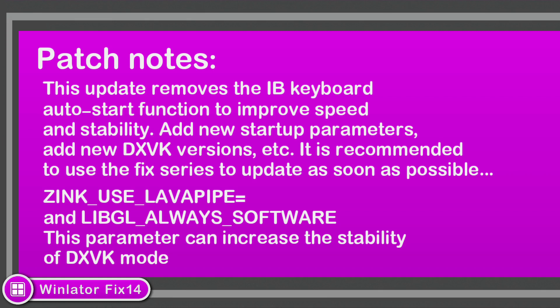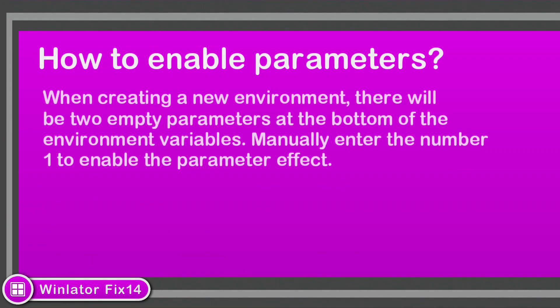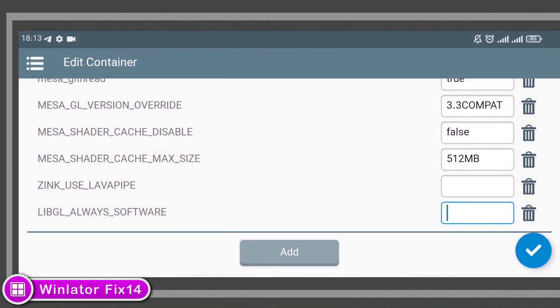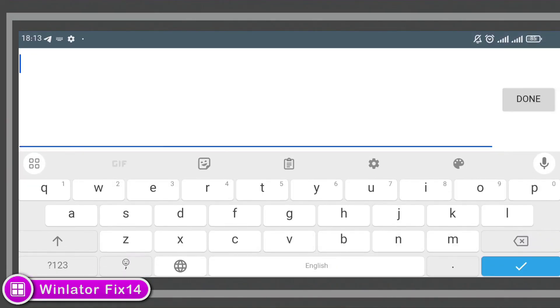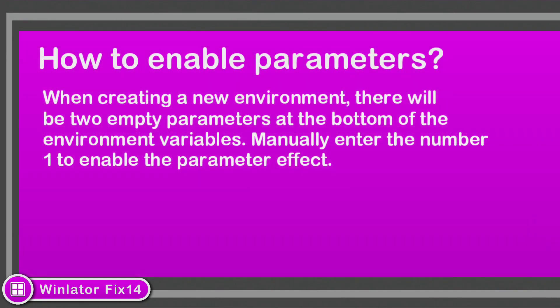It will make the D3D mode unusable, and the default is to disable the parameter. To enable new parameters: when creating a new environment, there will be two empty parameters at the bottom of the environment variable. Manually enter the number 1 to enable the parameter effect. That's it.